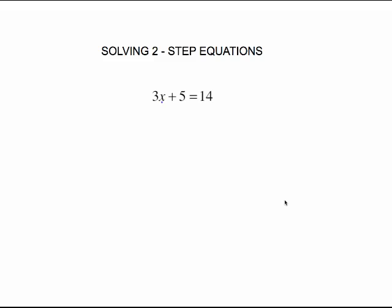This video will show you how to solve what's called a two-step equation. The reason this is called a two-step equation is because two operations have been done to x. Somebody started with some value of x, they multiplied by 3, and then they added 5, and the result was 14.